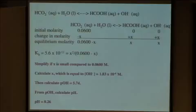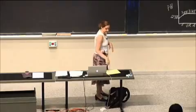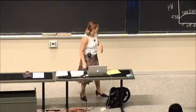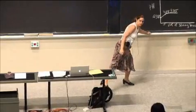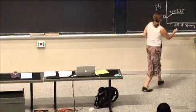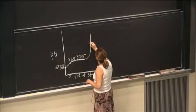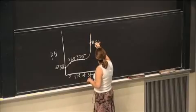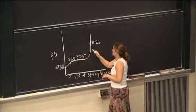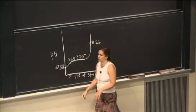So we can take 14 minus 5.74 and get our value. And it's bigger than neutral, it's 8, it's basic, and that makes sense. It is a weak base in water problem, so it's 8.26. So now we're up here in our curve, and we're at 8.26, and that's going to be greater than 7 for this type of problem.